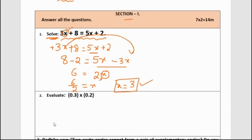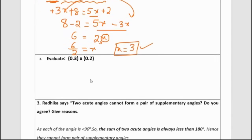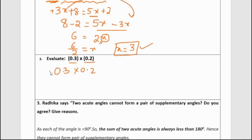Moving on to the second question: Evaluate 0.3 multiplied by 0.2. So 0.3 and 0.2 are multiplied. Before multiplying decimal numbers, we have to keep one thing in mind.